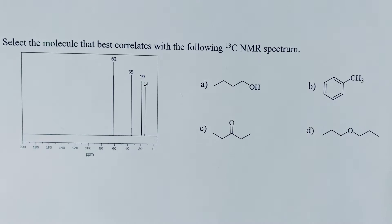Select the molecule that best correlates with the following carbon-13 NMR spectrum. We have four different possible molecules. We don't have a chemical formula, but we do have a carbon-13. So when I look at this,